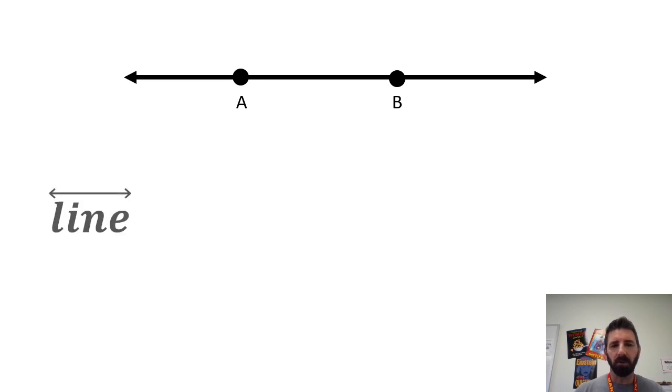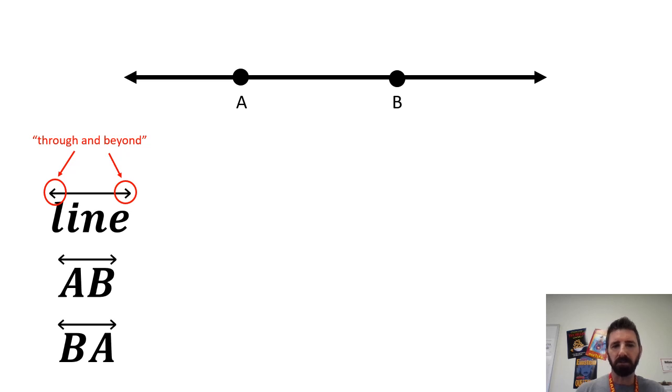When we name a line, we use this symbol above the name with two arrows at the ends. That tells us we're going through and beyond those points because the line goes forever in both directions. For instance, this line at the very top can be named line AB or BA. It doesn't matter which order. Those arrows at the top tell us we're going through those points below it, through A and through B.